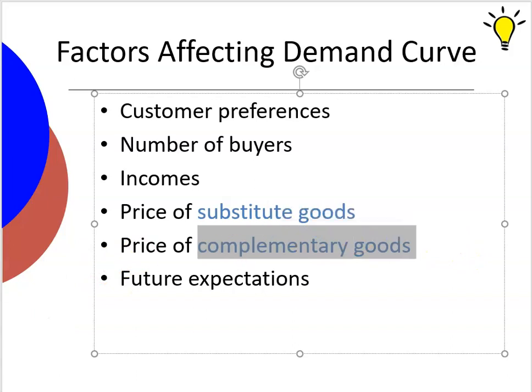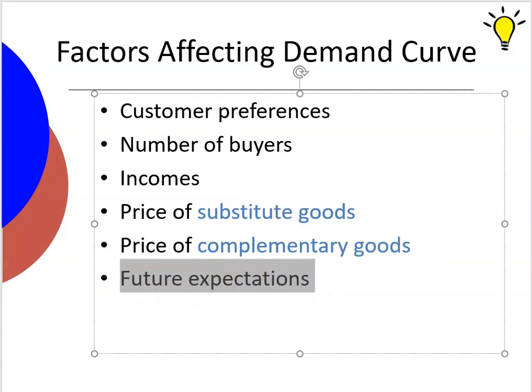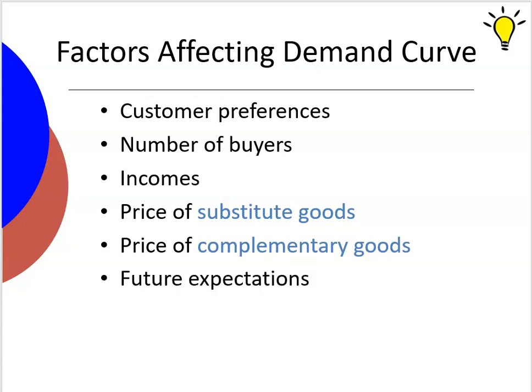Another term to note is complementary goods — things we buy together. For example, hamburger buns are typically purchased with ground beef. If the price of ground beef goes up, people won't buy ground beef, and they also won't buy hamburger buns. Gasoline and cars are another example: if gas prices go up, people buy fewer cars. Future expectations also affect demand — if people think there's going to be a pandemic, demand for toilet paper will surge and that demand curve will shift up.